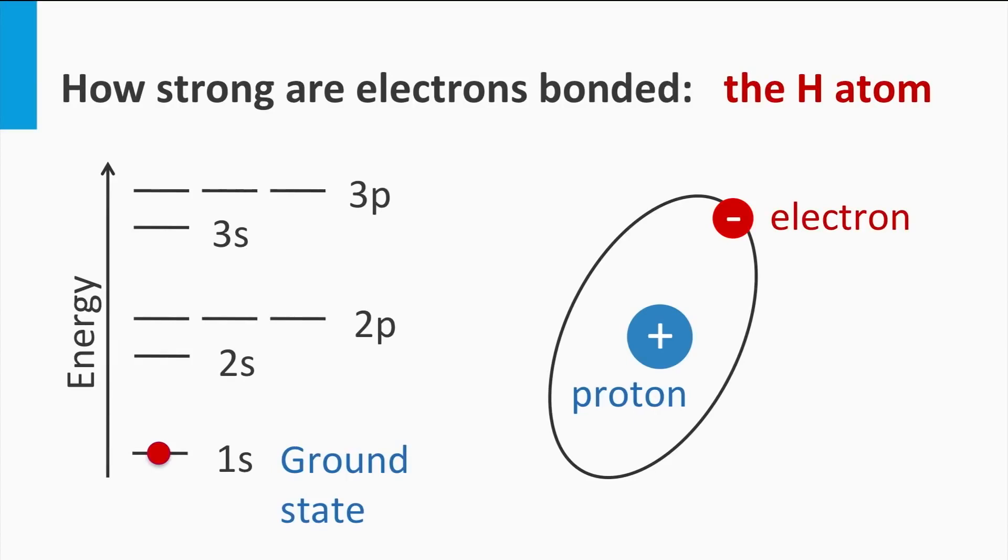If we give the electron more energy, it can be excited to a higher energy level, to the second shell. The electron is less strongly bound to the atom, and its average orbit is further away from the nucleus. In the second shell we find two types of electronic energy levels, 2s and 2p.